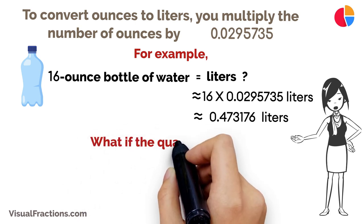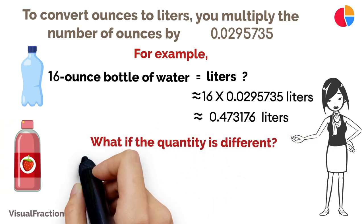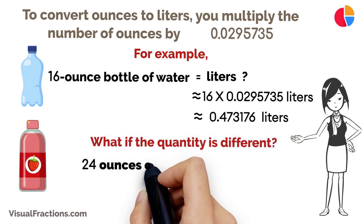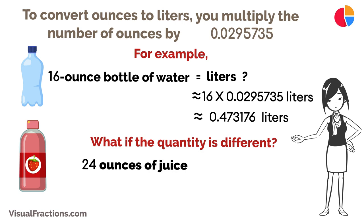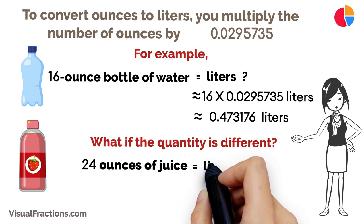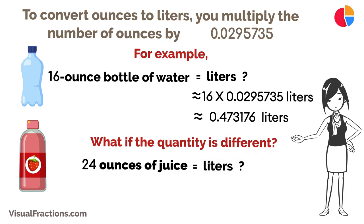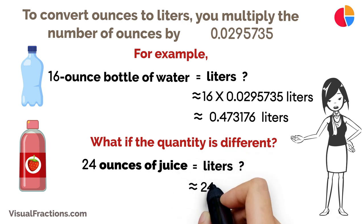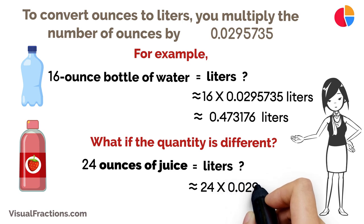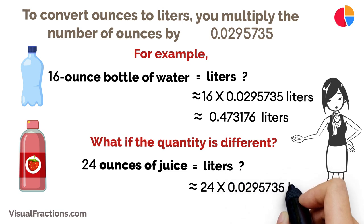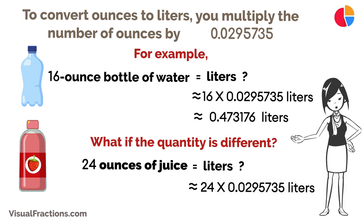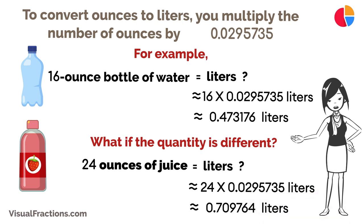What if the quantity is different? Suppose you have 24 ounces of juice. To convert that to liters, you would calculate 24 ounces times 0.0295735, which equals about 0.709764 liters.